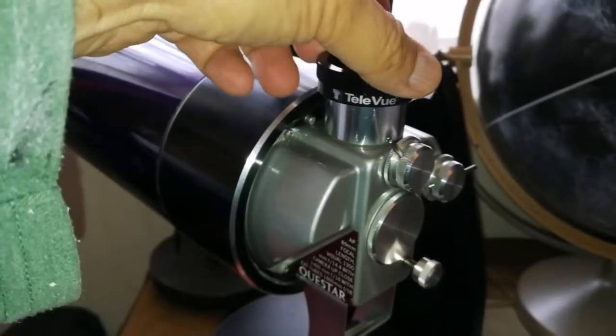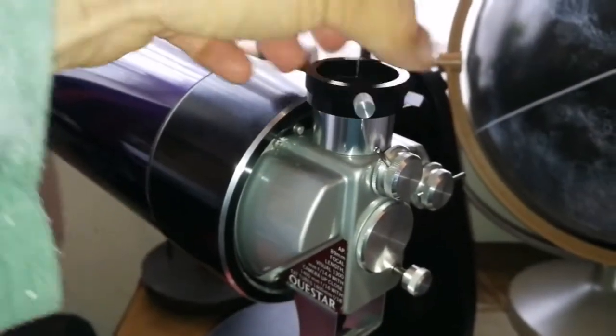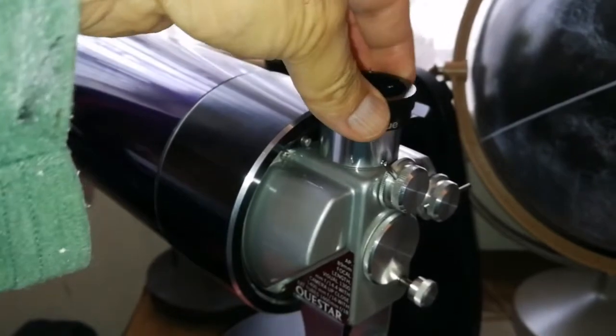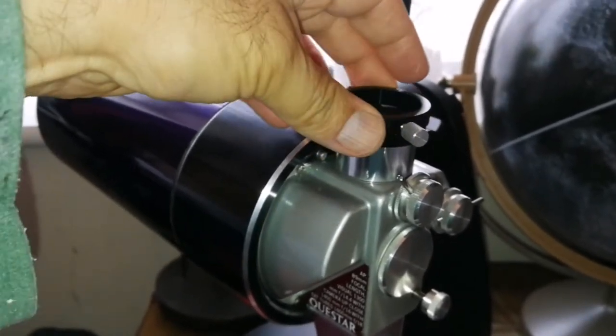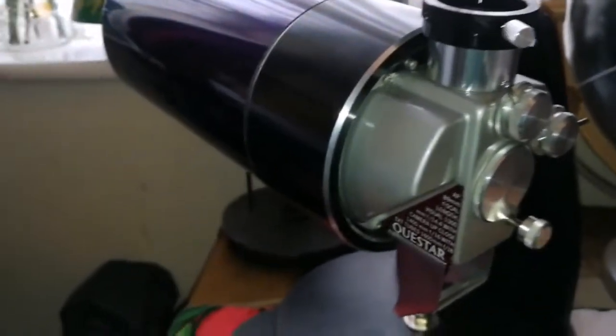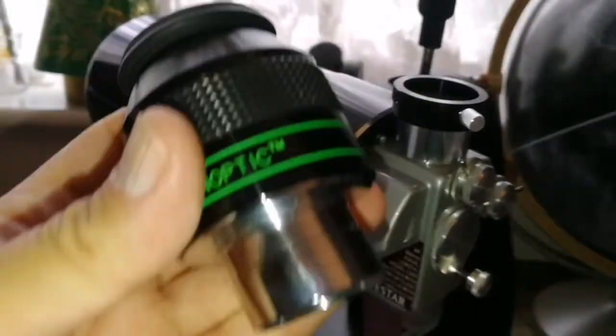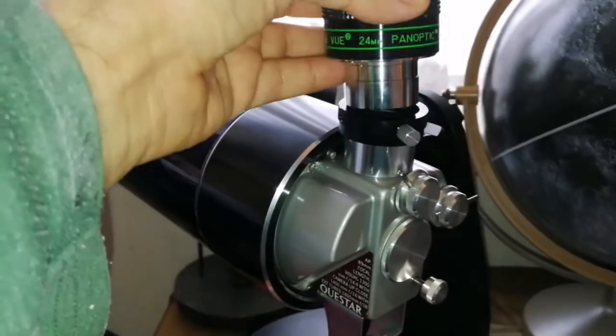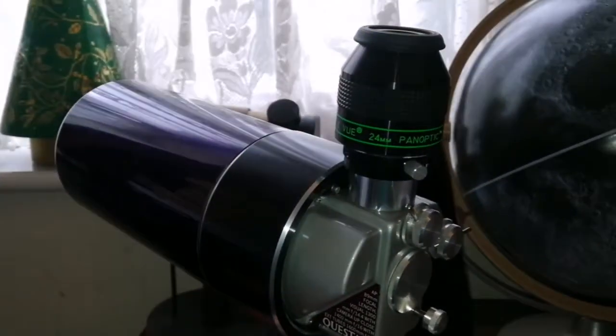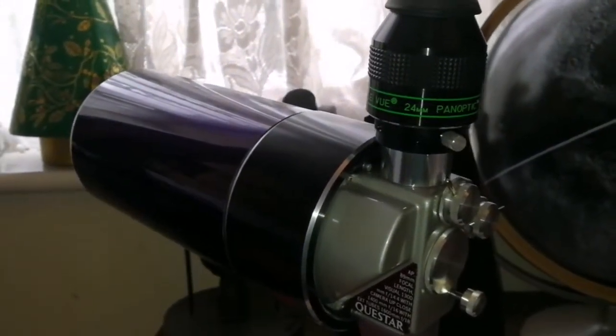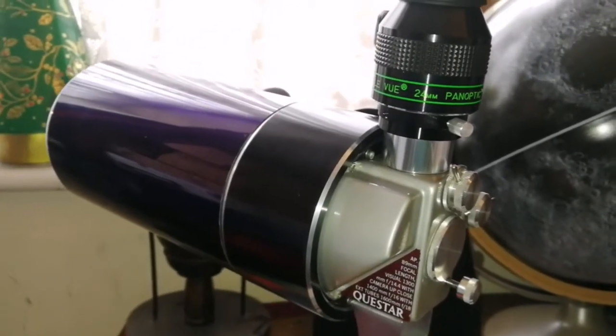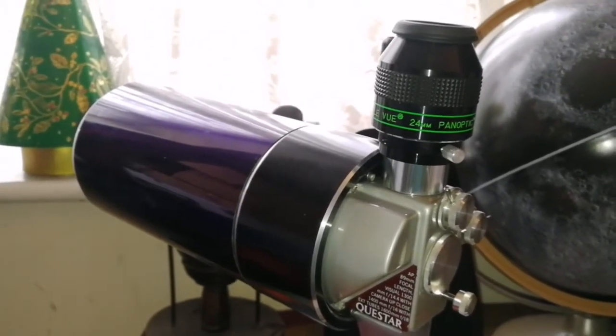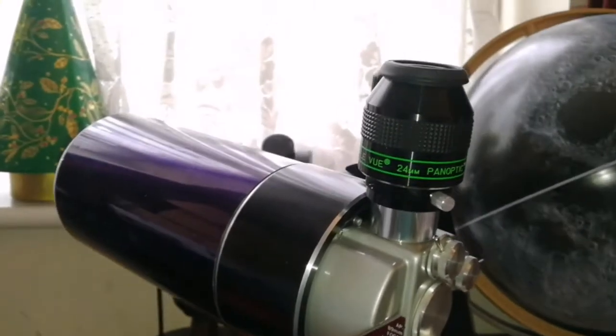Now I'm using this TeleVue to screw it here. And with just this simple modification, I can now use a Panoptic, simple as that. We have now a Panoptic on the Questar.